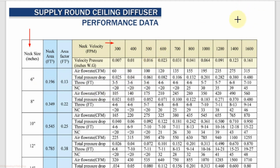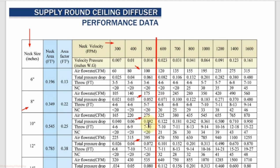If your duct is designed for a maximum neck velocity of 500 FPM, then you cannot go beyond this velocity to select the diffuser. After 500 FPM, for 6-inch neck size the maximum CFM will be 100 and the NC level will be less than 20 — very good. For 8-inch the maximum CFM is 175, for 10-inch it is 275, for 12-inch it is 395, and so on. When the NC level exceeds your requirement — suppose the maximum limit is 30 NC — then you need to select according to NC level.